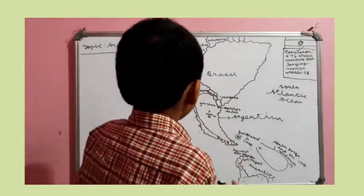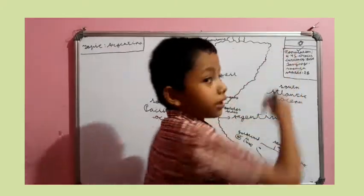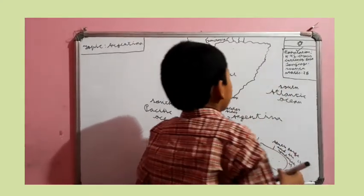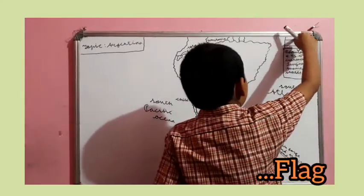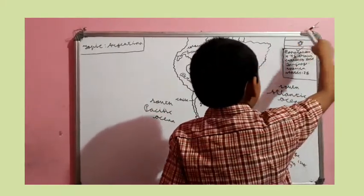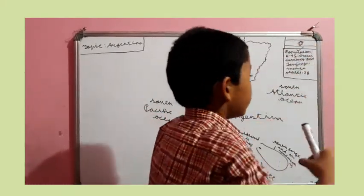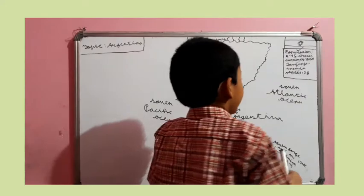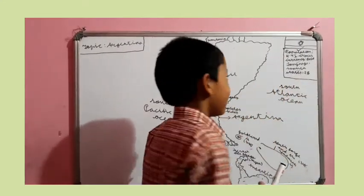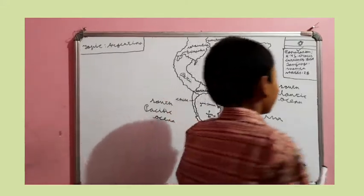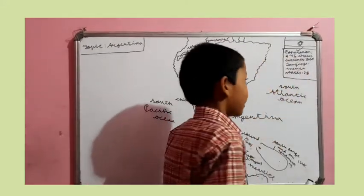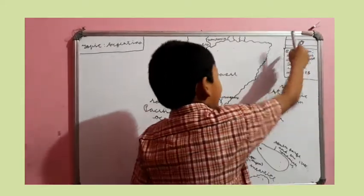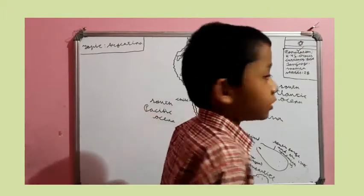Argentina's flag is right here at the top. Argentina's flag is colored light blue, then a white color between the two light blue stripes, and light blue again. At the center is the sun, which looks similar to Uruguay's flag, but it's not the same. This sun is what designs Argentina's flag.